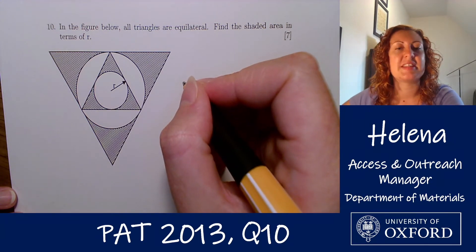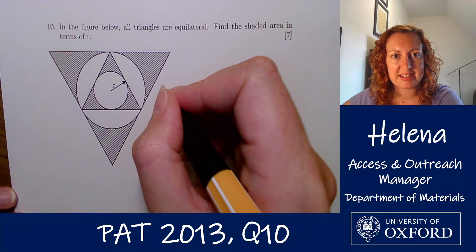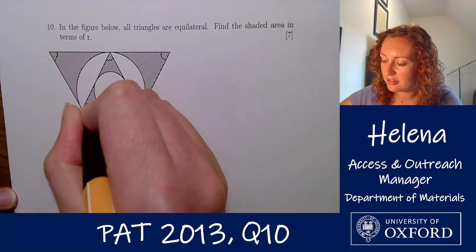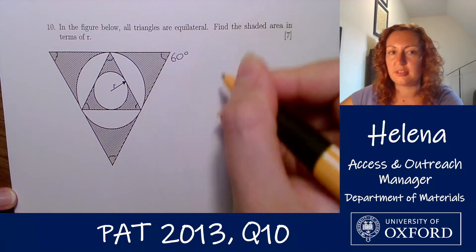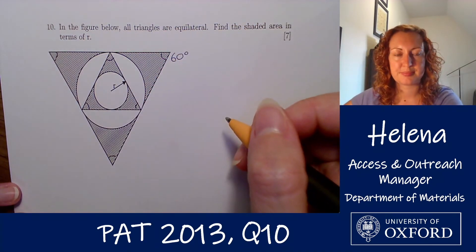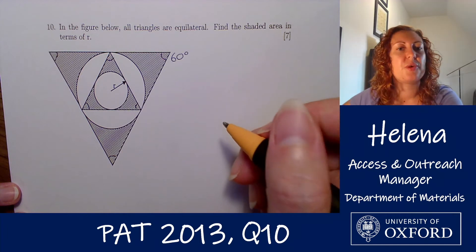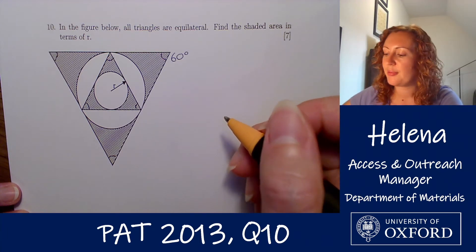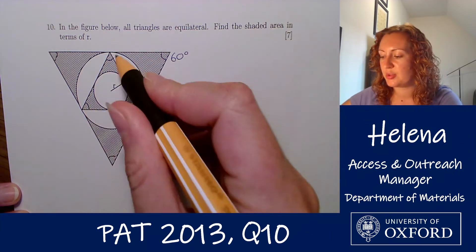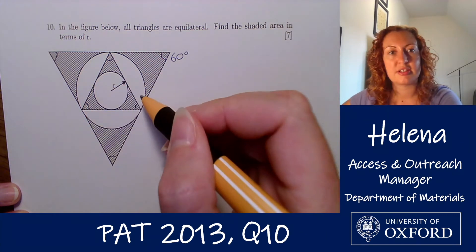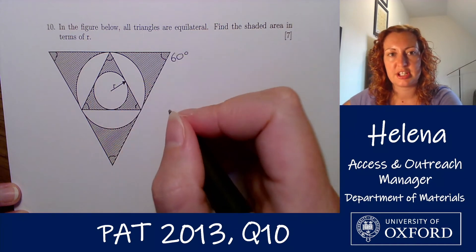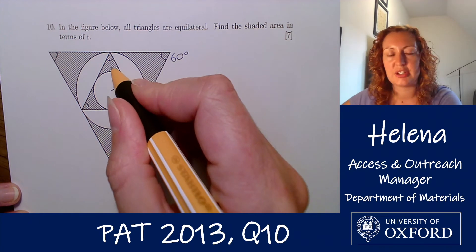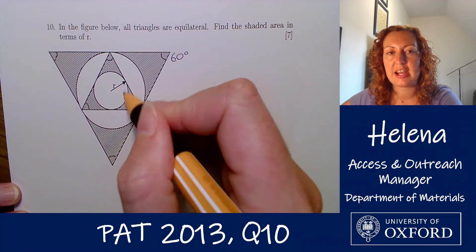What does that mean? That means that all three sides are the same length and all of the angles in both the bigger and the smaller triangle are equal — they're all 60 degrees. So what are we going to need to do in order to find this shaded area? We're going to want to first break it down into the smaller inner circle-and-triangle shape and the larger outer shapes, and we're going to find the area of the triangle and take away from that the area of the circles.